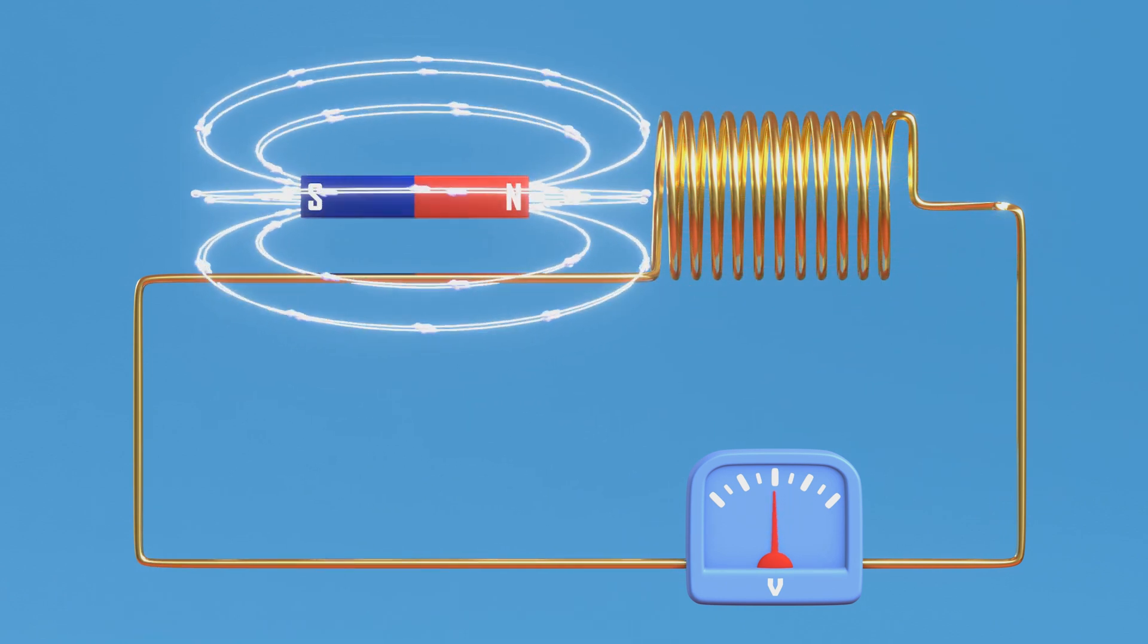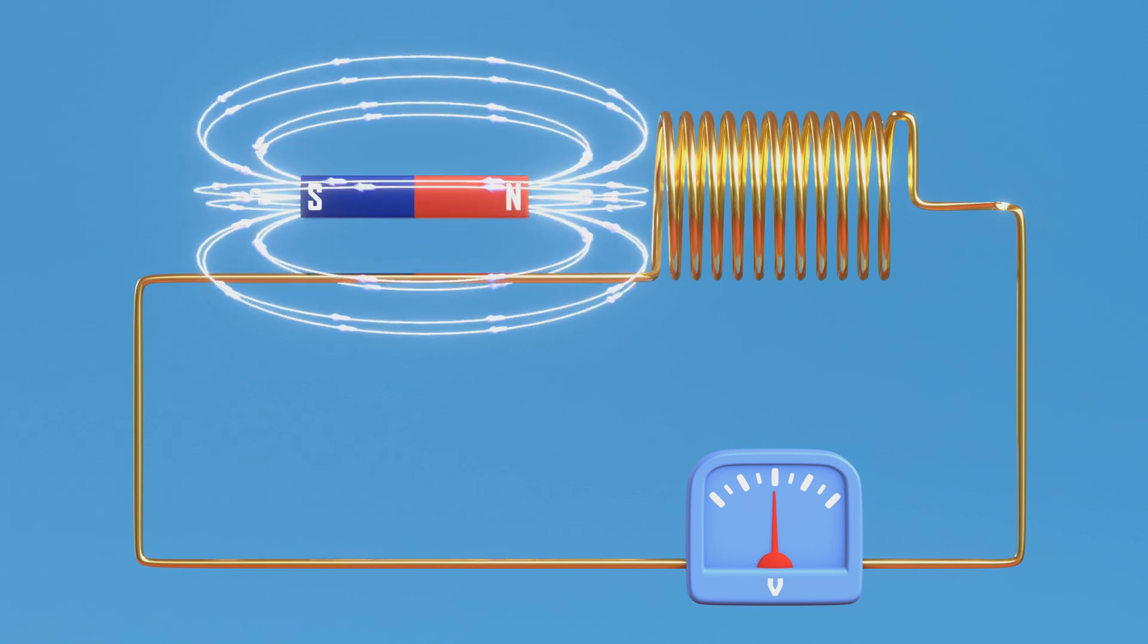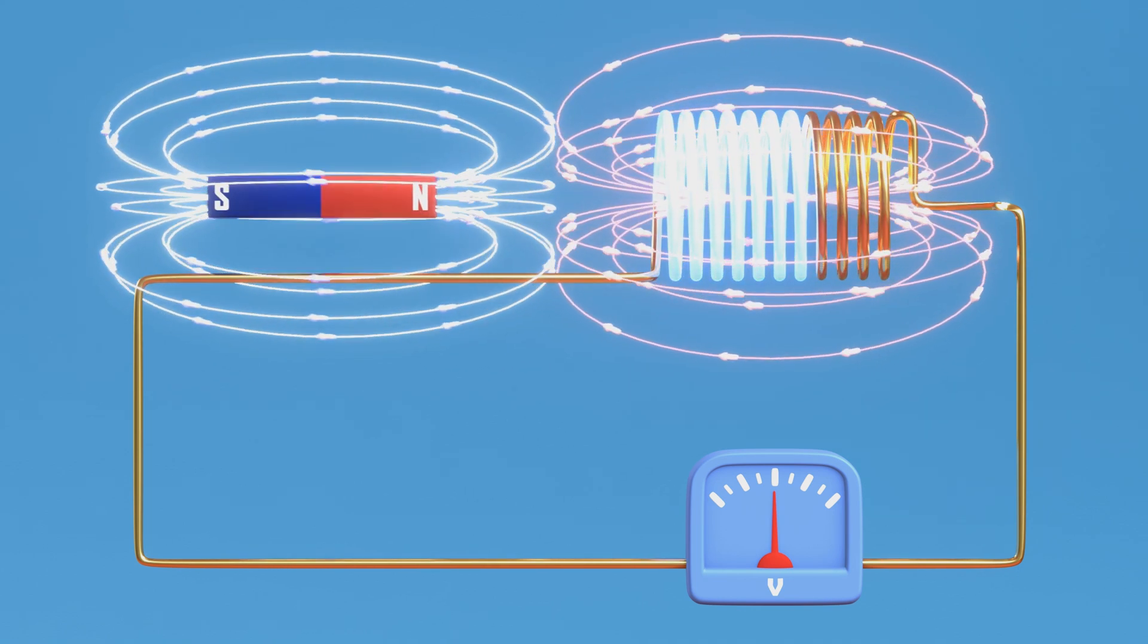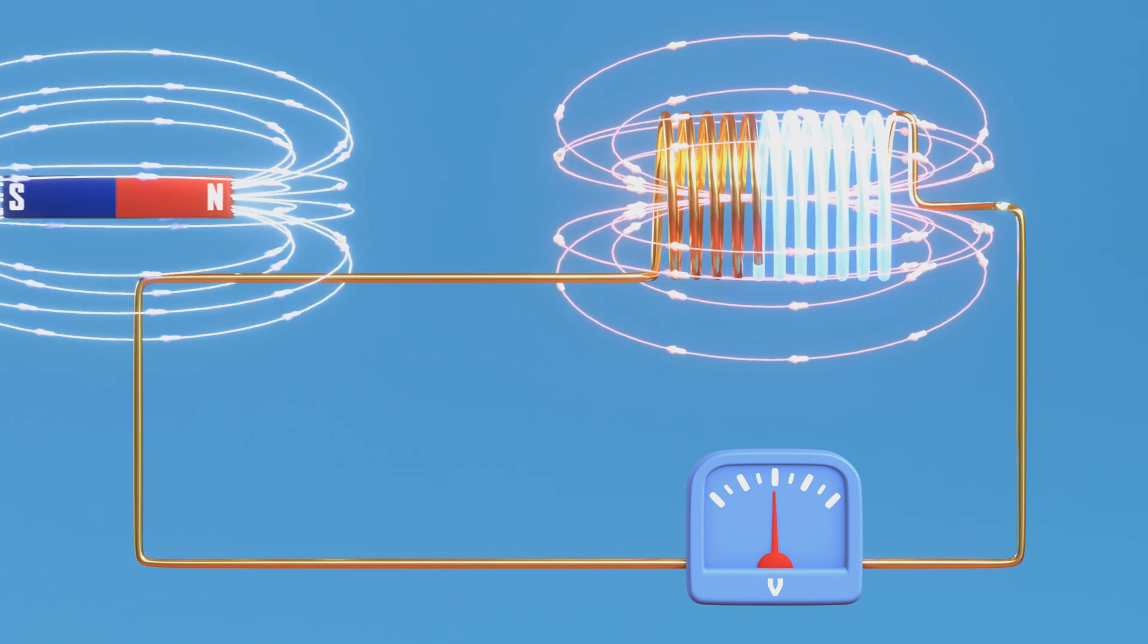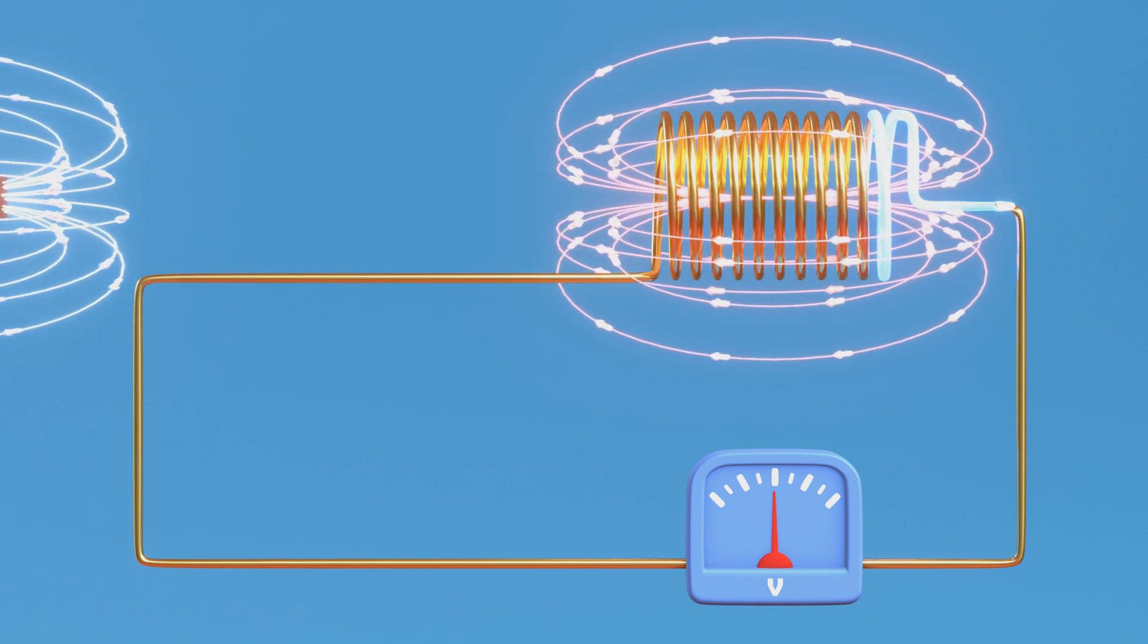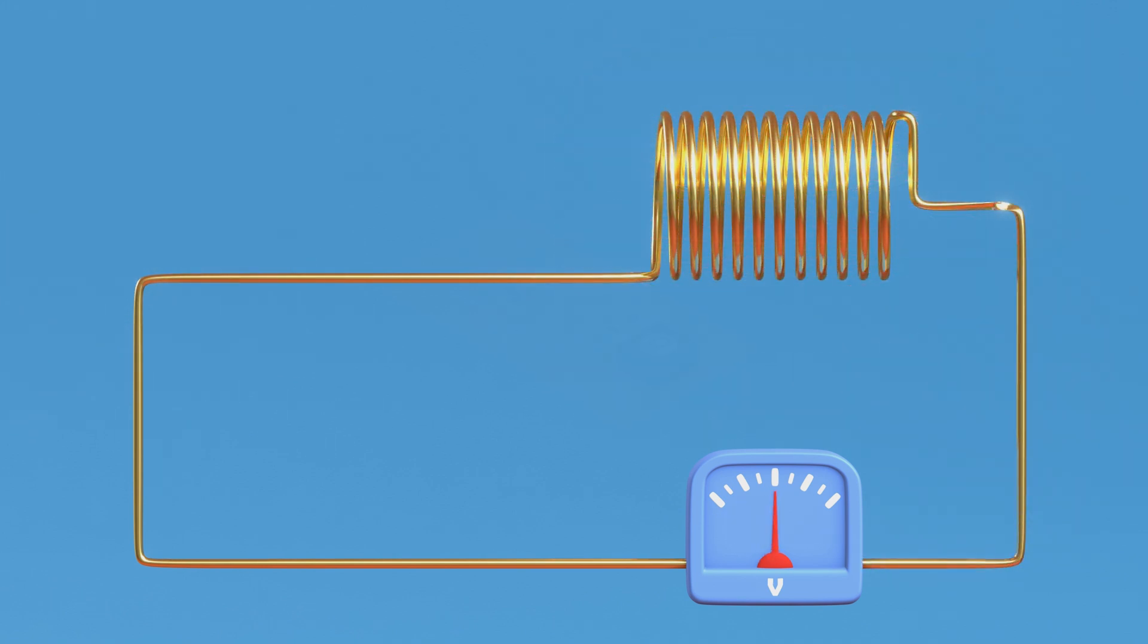Similarly, as the magnet is displaced, the coil induces a current that produces a magnetic field opposing the external magnetic field, with the induced current moving from right to left.